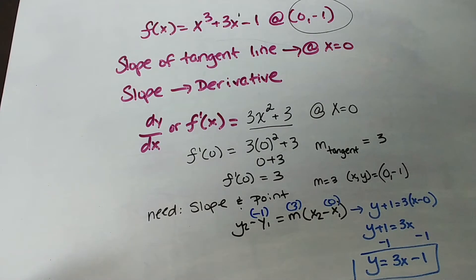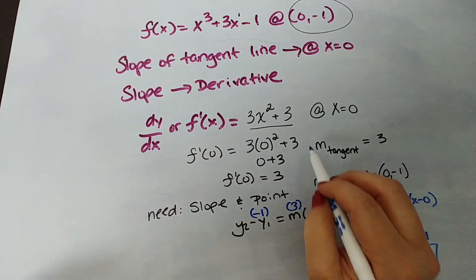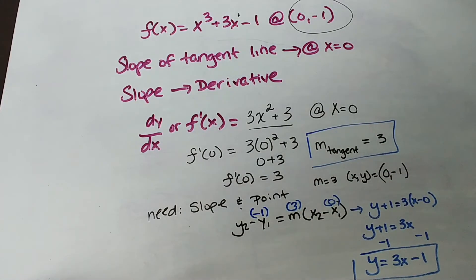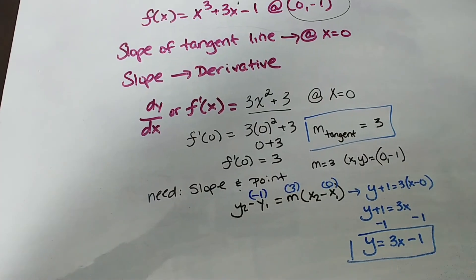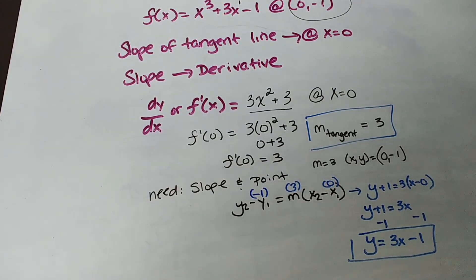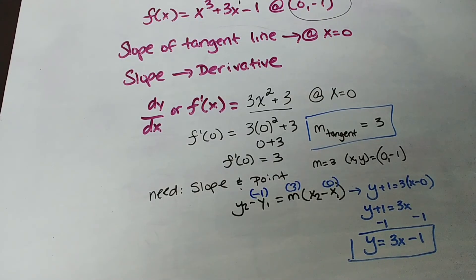That is the slope at (0, -1). Remember, this is a curve, so the slope is going to be different — you're going to have a bunch of little tangent lines all over this curve, and the slope will be different at each point. I hope that helped. This is a really popular question right after you learn derivatives, and it's going to show up on your tests and final. If you have any questions, pop them in the comments section, and be sure to subscribe to our YouTube channel.